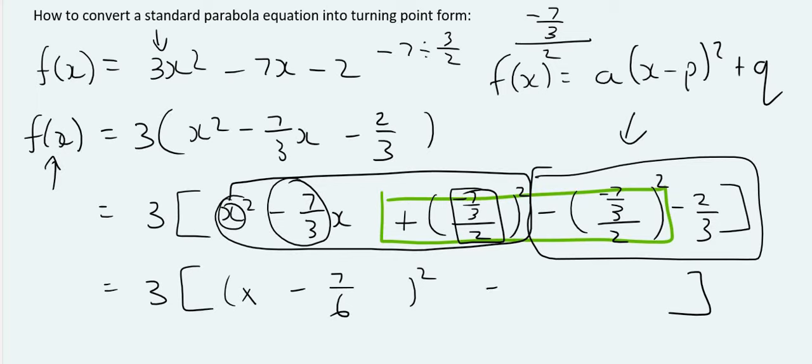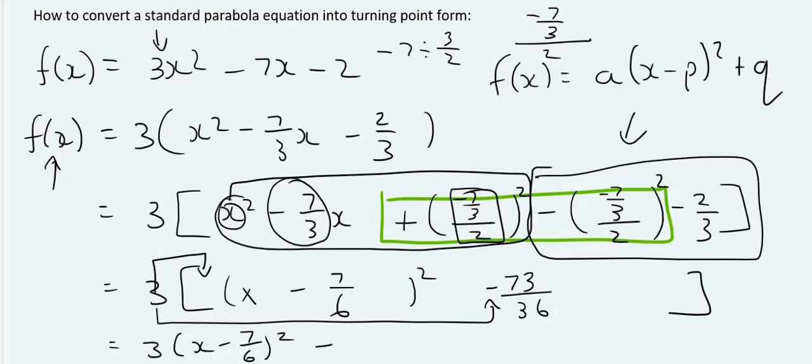And that's going to give you minus 73 over 36. We then put the 3 back. So, the 3 is going to end up over there. And then the 3 is also going to multiply over there. So, that's going to give us 3x minus 7 over 6 squared minus.